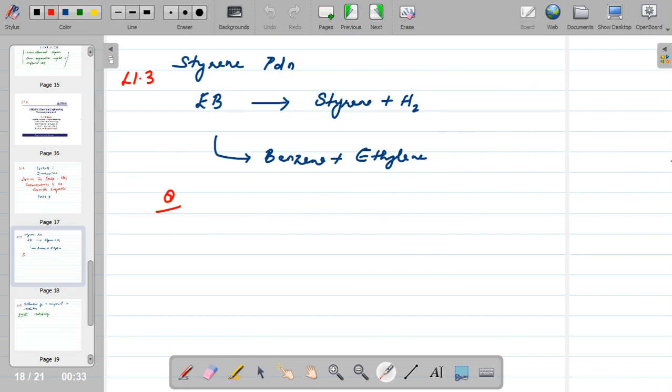If you recollect lecture 2, we stopped with the task of finding a styrene production process. Styrene is produced by dehydrogenation of ethyl benzene, so ethyl benzene dehydrogenates to give styrene and hydrogen. But this is an endothermic reaction, so this step consumes energy. Whereas this ethyl benzene can also undergo decomposition to give benzene and ethylene.